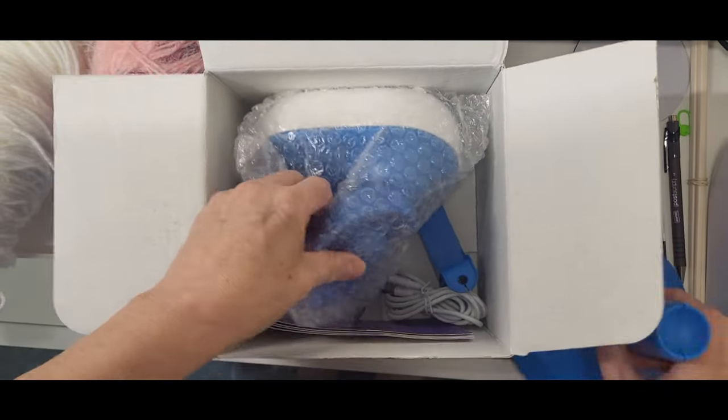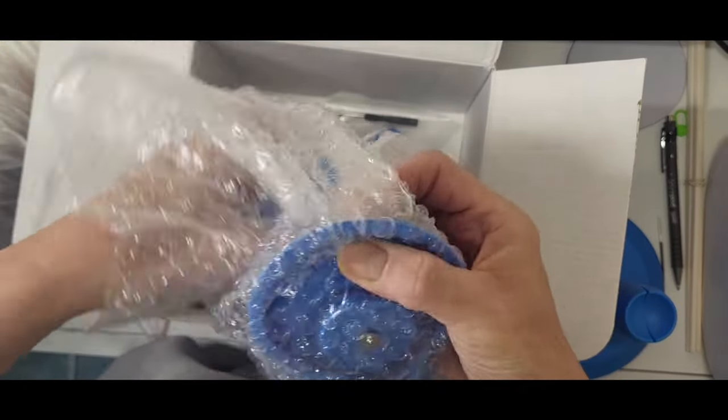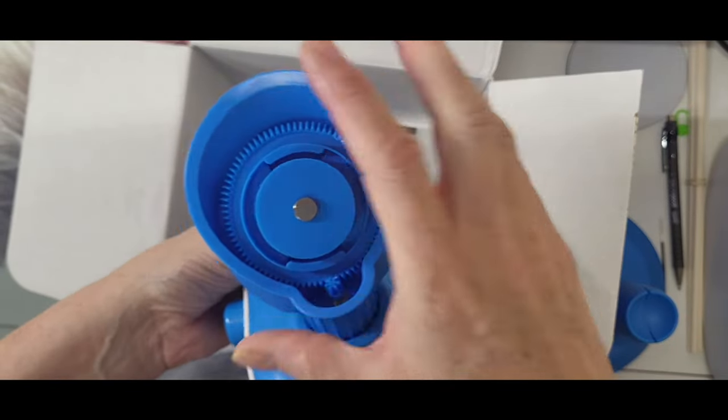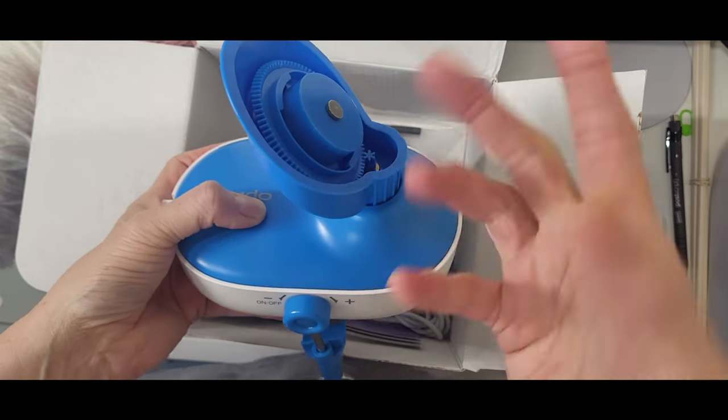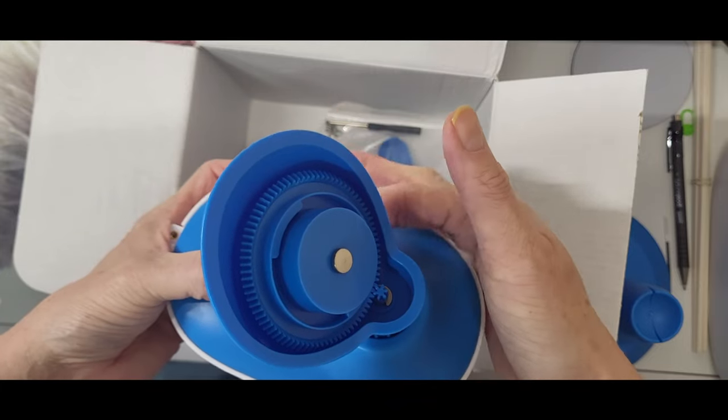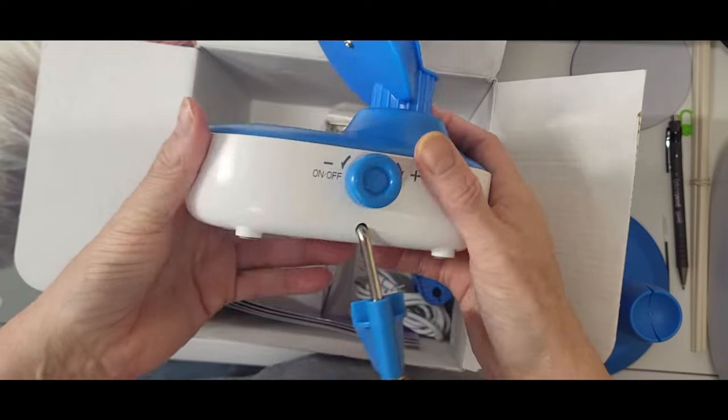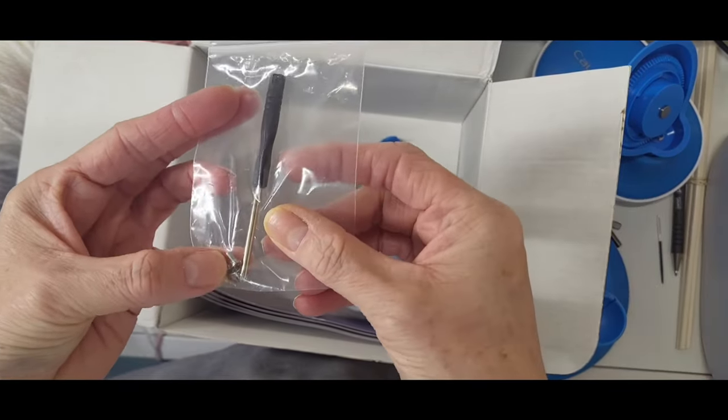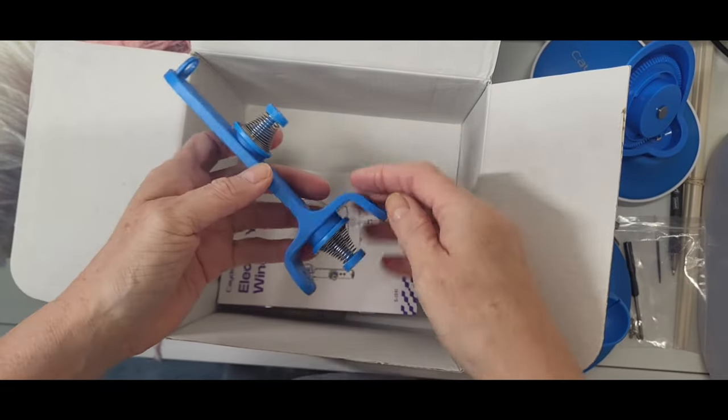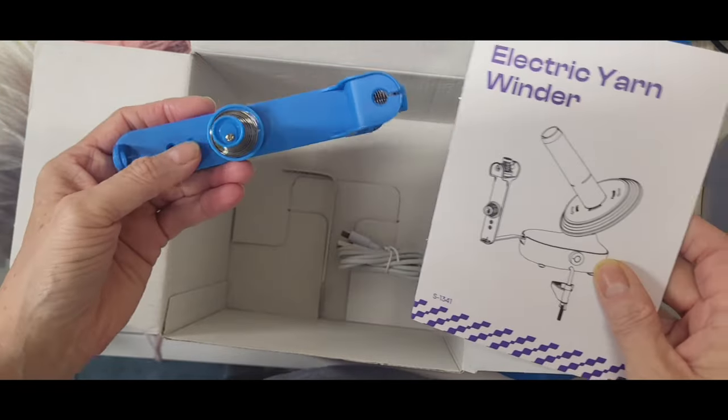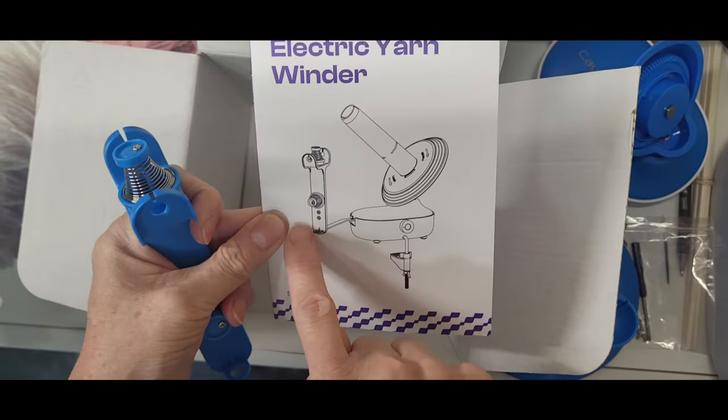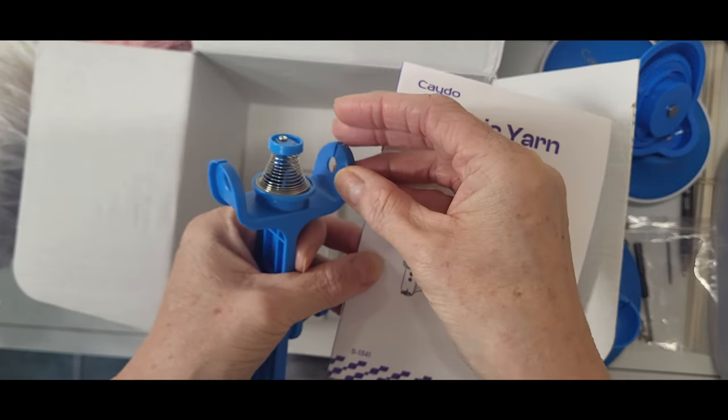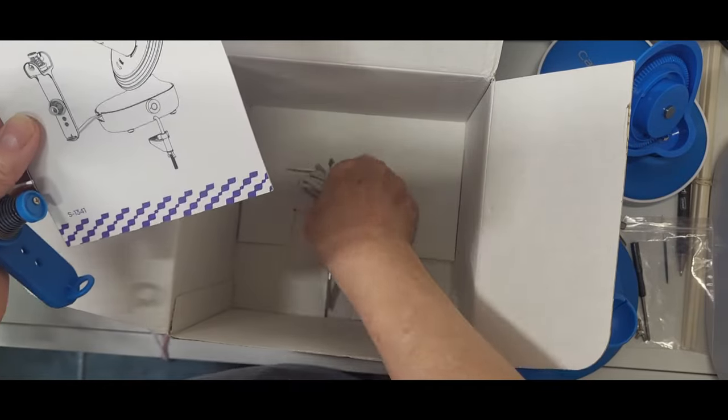So there's another piece, this is the base that goes on your table. You've got your gear system. I like the fact that the gears are on the inside, not the outside, because a lot of times when you're winding and the yarn slips off, it will get all caught up in these gears. That's good. It comes with its own little screwdriver. This is the arm that holds your yarn.